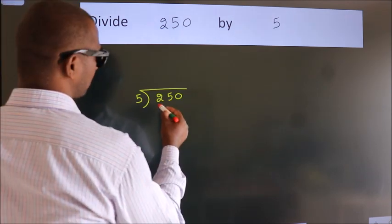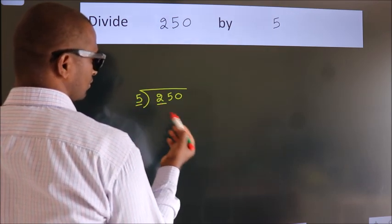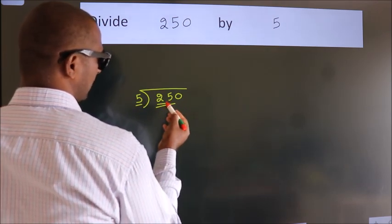Here we have 2. Here 5. 2 smaller than 5. So we should take 2 numbers. 25.